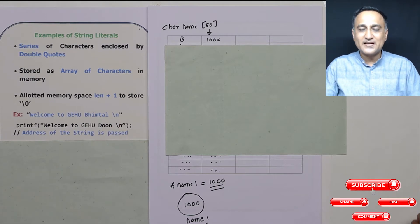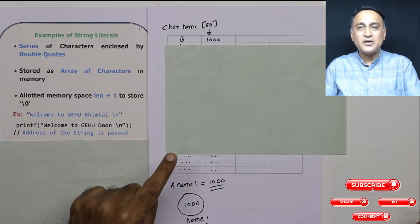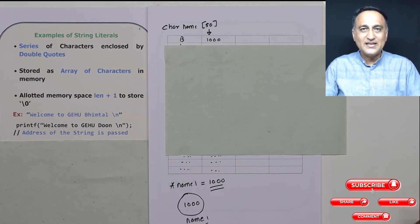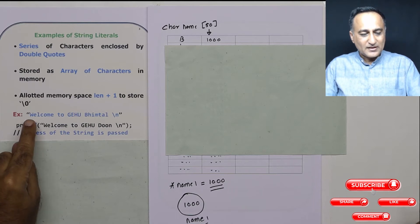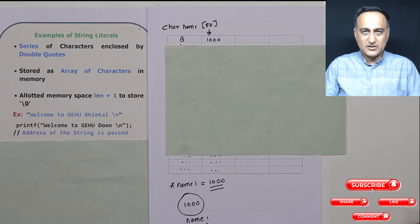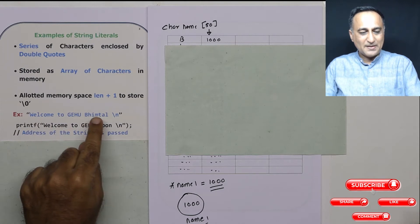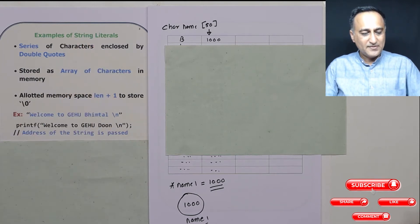If you don't insert the null character, in the previous video you have seen what is the problem. After the enter character, it may print garbage till it encounters the null character. So for printf, the address of w is passed. This particular is an example of a string literal in C.